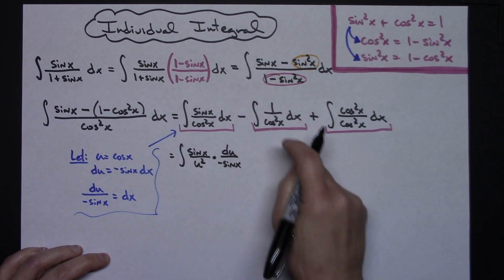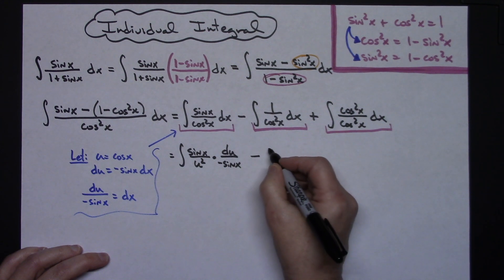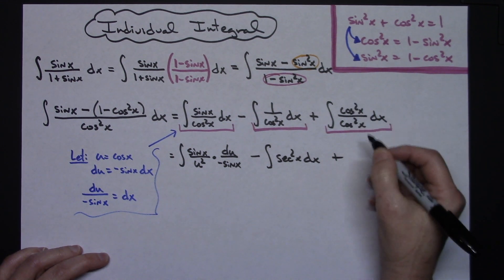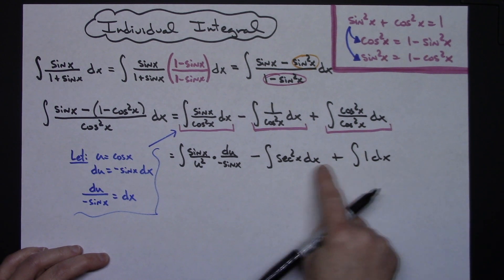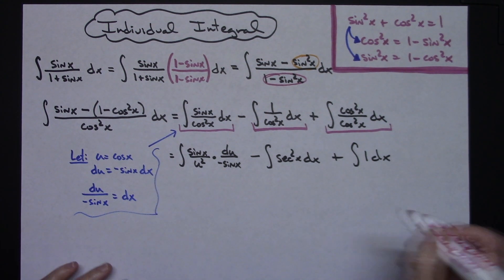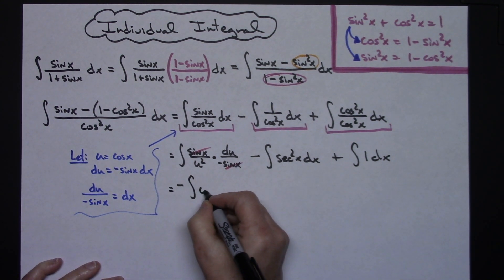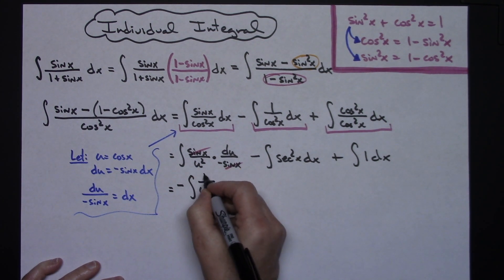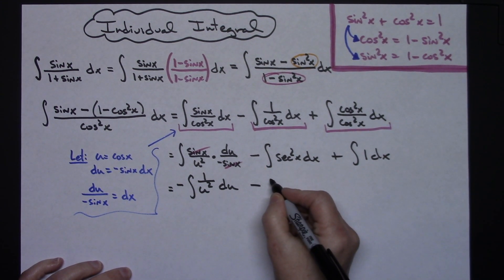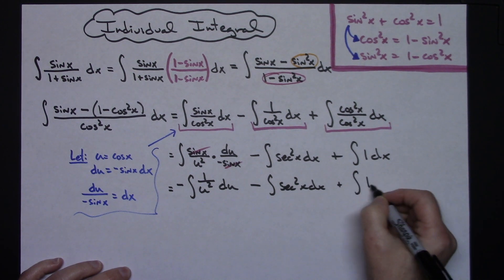That's going to allow me to work on the first integral. I'll have sine x on top, u squared on the bottom since u is cosine x, and replacing dx with du over negative sine x. Now let's substitute on the other two as well. The second is minus the integral of secant squared x dx. The third, since anything over itself is 1, is just the integral of 1 dx. Those two are straightforward. Pulling the negative out front and canceling sine x, the first becomes negative the integral of 1 over u squared du.